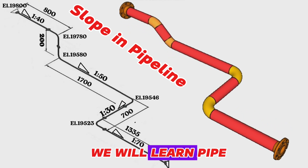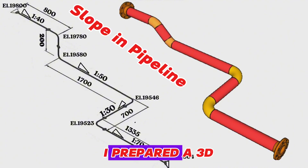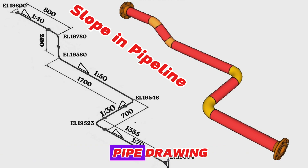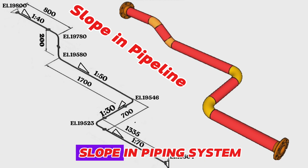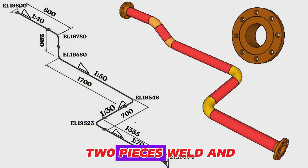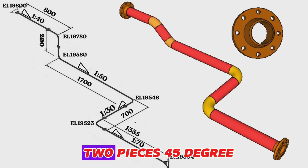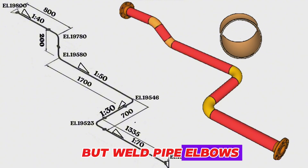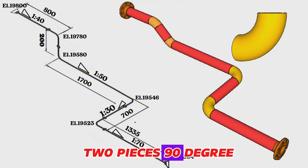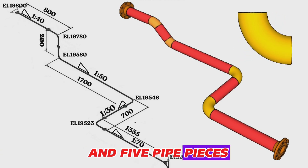In this video, we will learn pipe slope calculation in the 3D model pipeline. I prepared a 3D model animation of this pipeline and put the 3D model together with the pipe drawing for you to easily understand slope in a piping system. As you can see, in this pipeline we used two pieces weld neck flanges, two pieces 45-degree butt weld pipe elbows, two pieces 90-degree butt weld pipe elbows, and 5 pipe pieces.